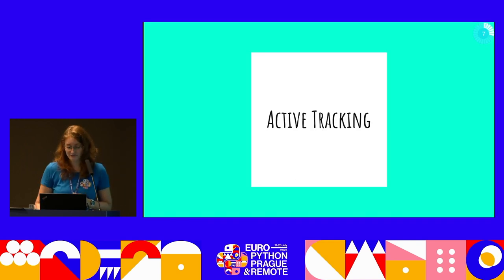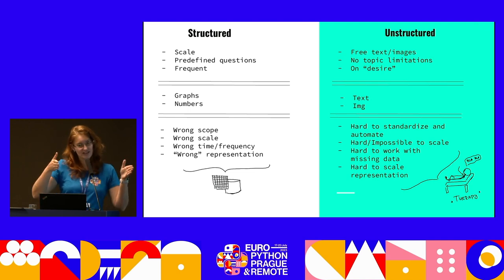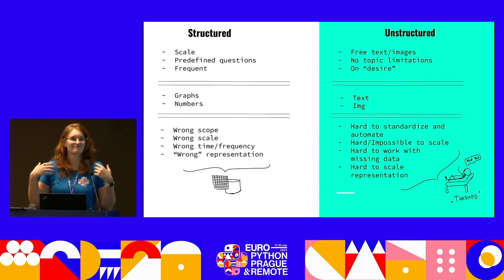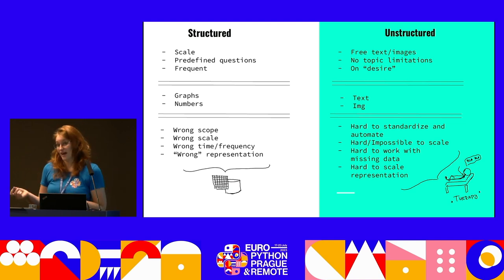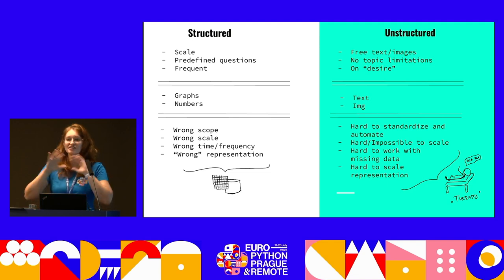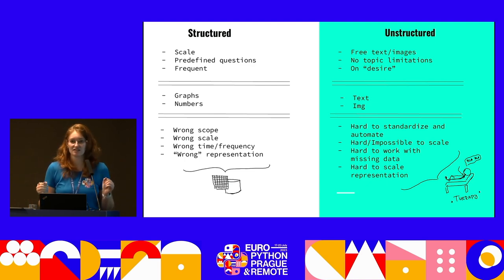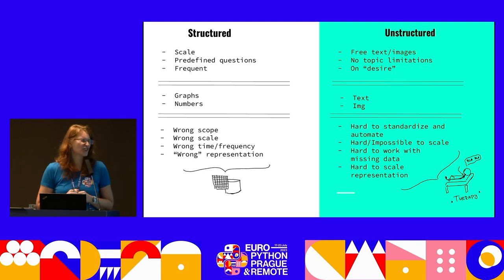Let's dive into active tracking. Within active tracking we have structured data or apps and unstructured apps. Unstructured would basically be therapy, your free source — journaling, mood journals where you write with your own hand, draw pictures and everything else. But the problem is this is so hard to standardize and to put for multiple different non-homogeneous customer groups into one app. So it does make sense — go to therapy, always good.